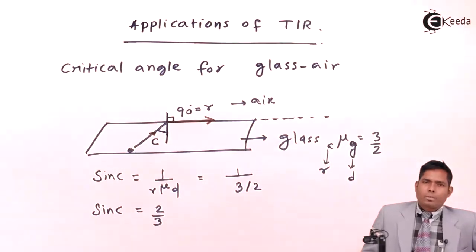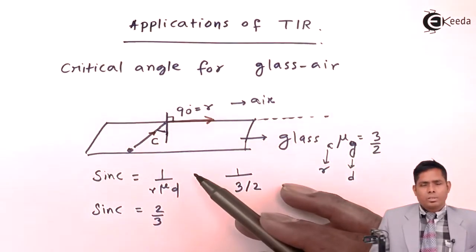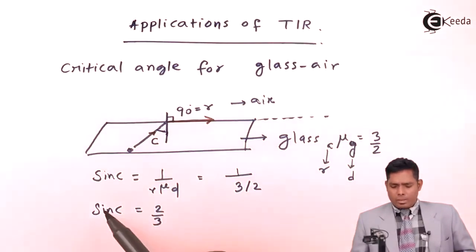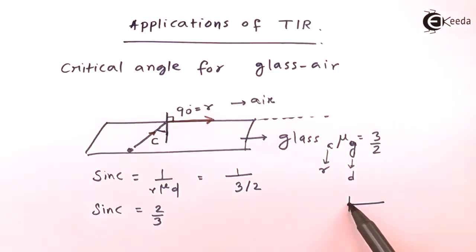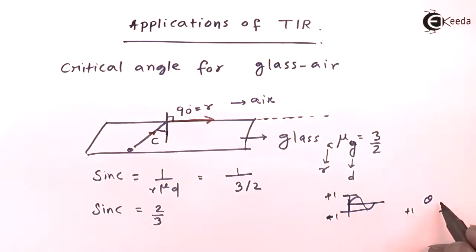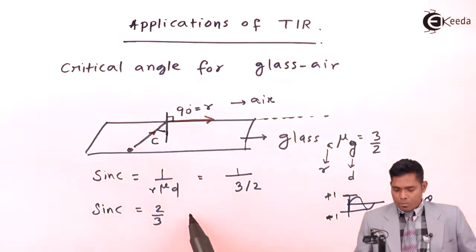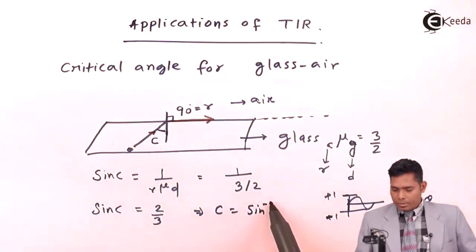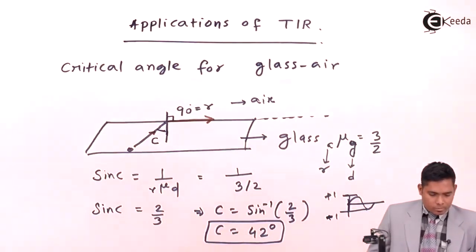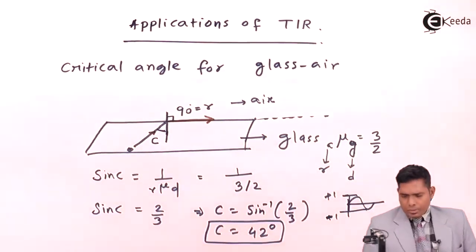If you are confused about putting the value here, note that we cannot write 3/2 for sine C because that would be greater than 1 — sine of any angle always lies between -1 and +1. So sine C = 2/3, which is approximately 0.67, and therefore C = sin⁻¹(2/3), which comes out to be nearly 42 degrees.